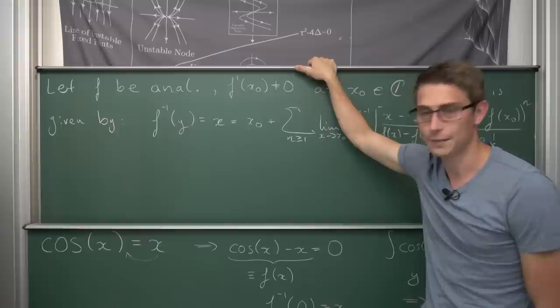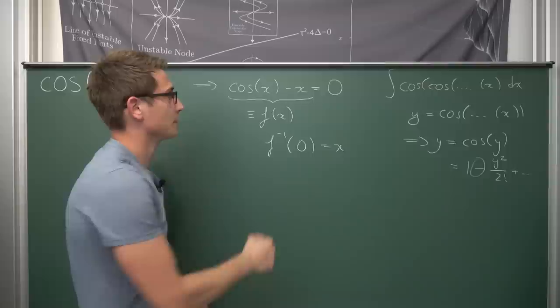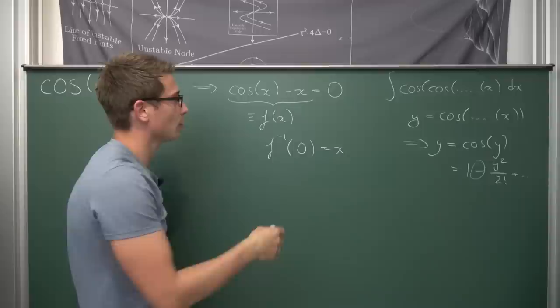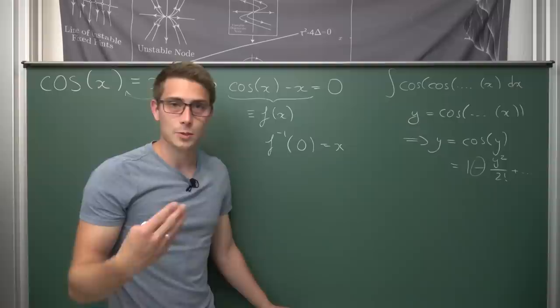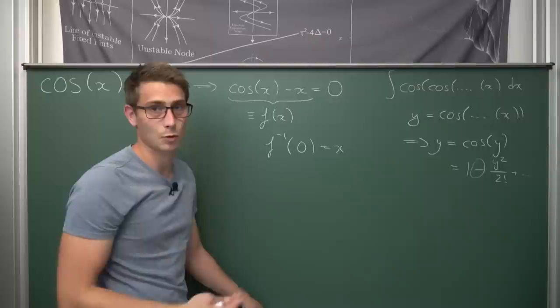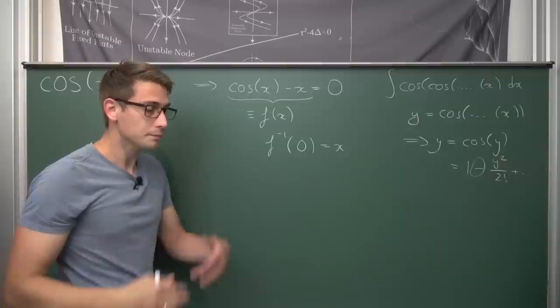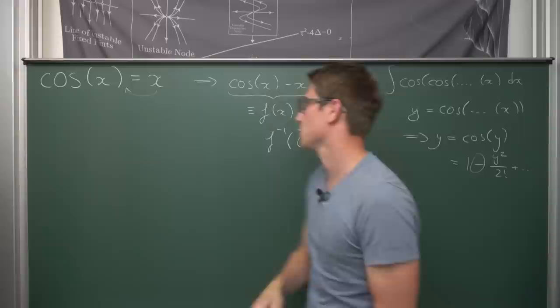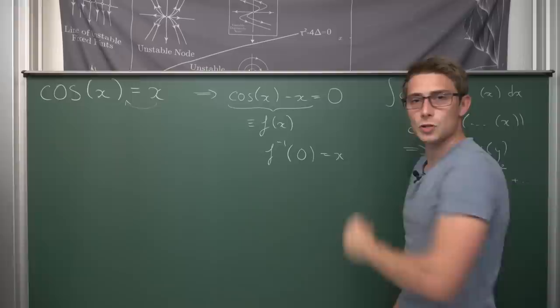Next we need to check if f(x) = cos(x) − x is analytic. We're in luck: polynomials are their own Taylor series expansions, and cos(x) — defined as the real part of the complex exponential — is analytic everywhere with infinite radius of convergence. The difference of two analytic functions is also analytic, and it also has infinite radius of convergence.